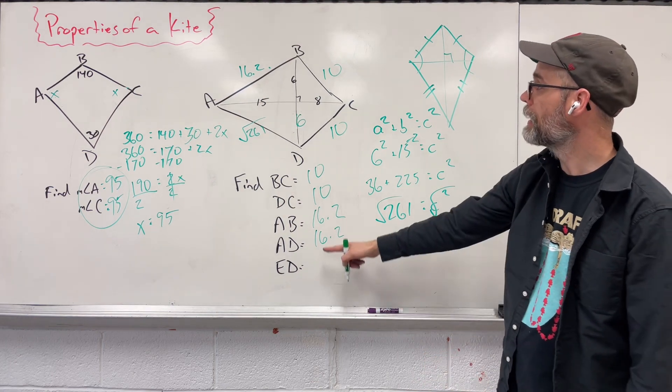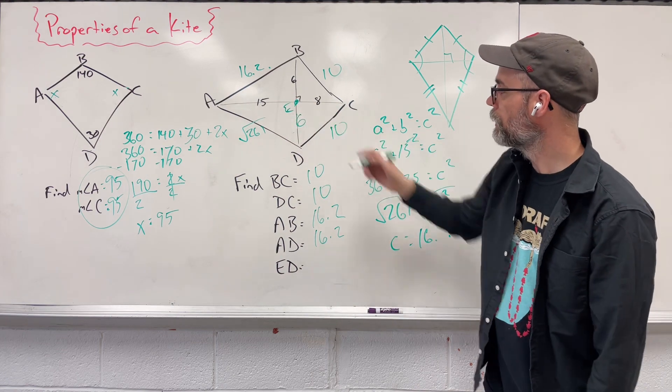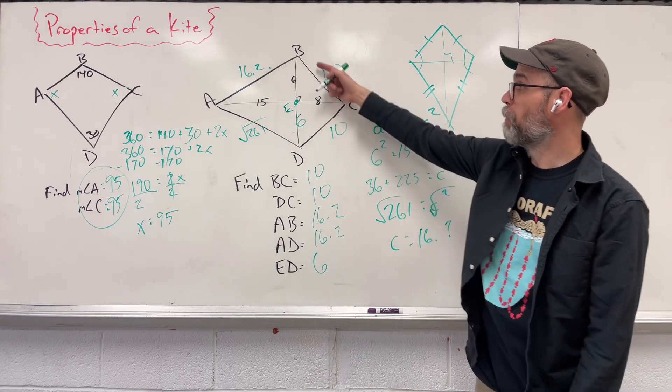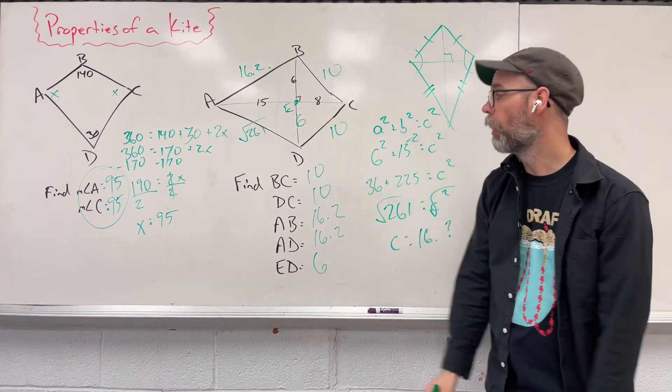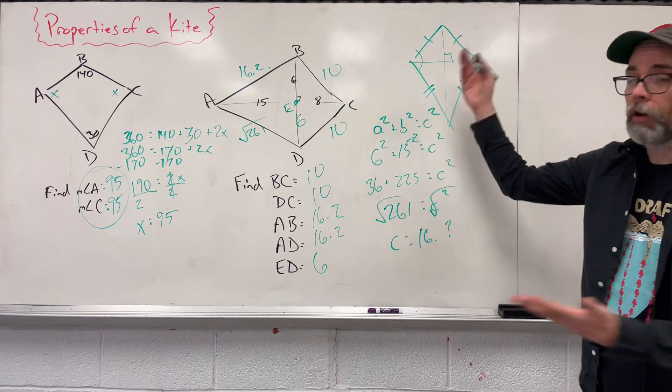And lastly, ED. Oh, that should have been E right there in the middle. ED is going to give us 6. And if we ask for BD, we can then say 12. And that's using the properties of kite to figure out our missing sides.